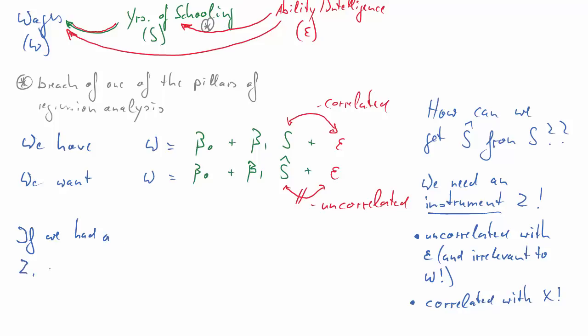But before we get there, let's see what we would do if we had such a set. If we had such a set, what we could do is we could postulate the relationship between S, the years of schooling, and that instrument set. Now we do that in a regression context again. So I'll write down here a regression relationship, a linear one in this particular case. If we then estimate that relationship and obtain estimated coefficients α₀ and α₁, we get altogether a predicted value of S, S hat. And now it's that value which we can use in here.